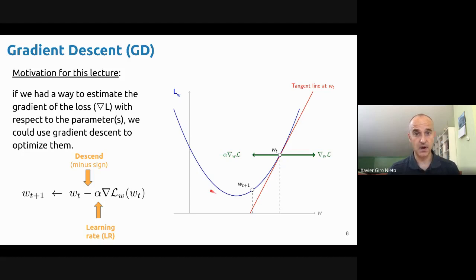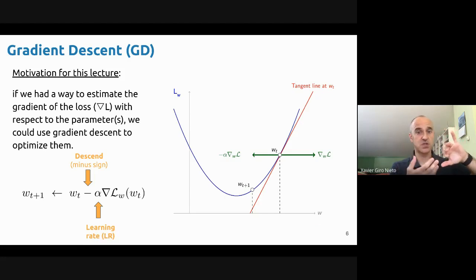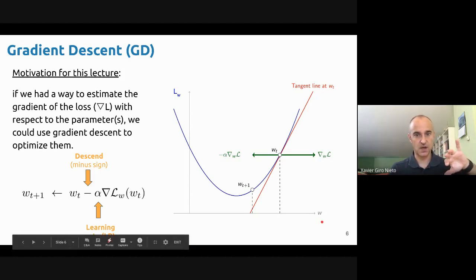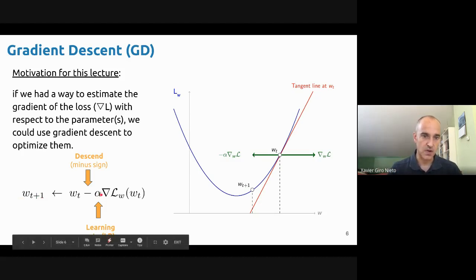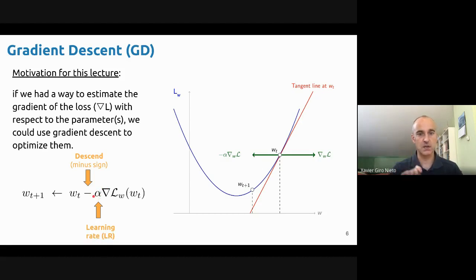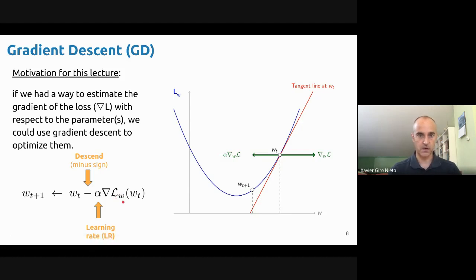The learning rate alpha is what we call a hyper-parameter — a value you need to define yourself when training neural networks. Choosing the right learning rate is normally one of the challenges, and it's often changed through the training process to help our parameters find a combination that decreases the loss. The lower the loss, the better the predictions of our model. Remember, our loss curve will not be as nice as this one, and we will not have just one parameter W — we're going to have millions of parameters, each weight and bias of all the neurons. That's going to be the big challenge, and that's what the GPUs are computing when training deep neural networks.